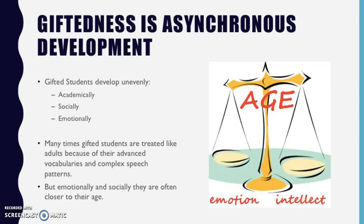Many times gifted students are treated like adults because of their advanced vocabularies and complex speech patterns, but emotionally and socially they are often closer to their actual age. Just because they talk in a certain way or seem more mature because of the complex words they use, it doesn't necessarily mean that they are older — they're still kids that need to be treated as such.